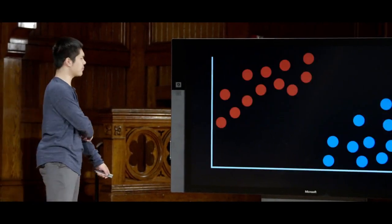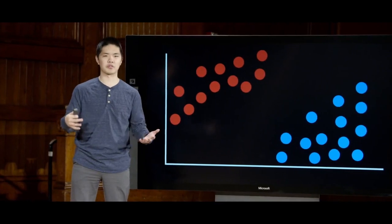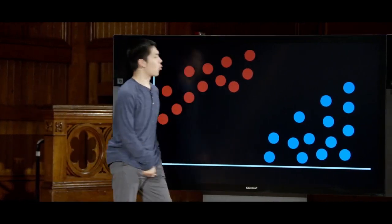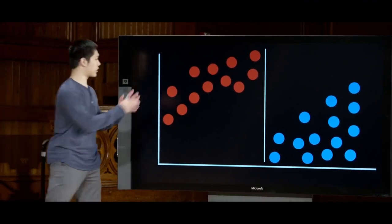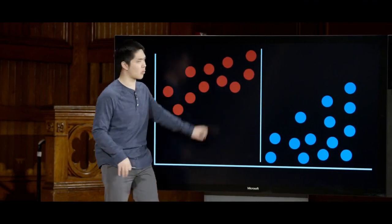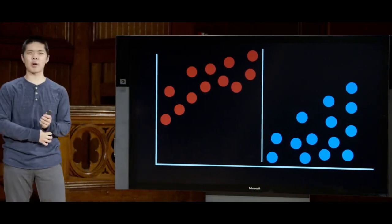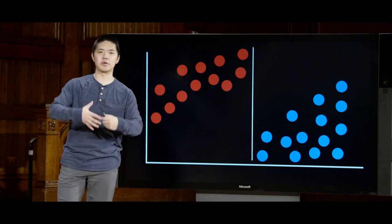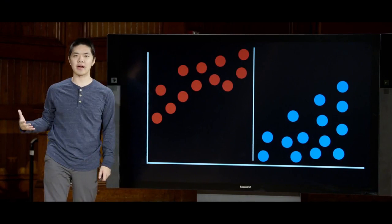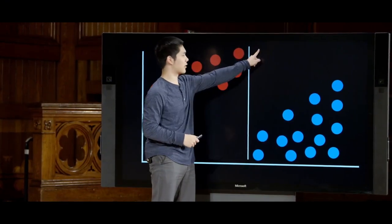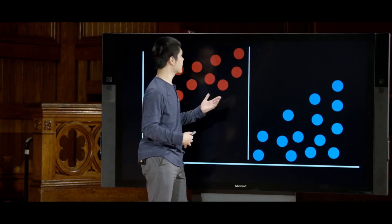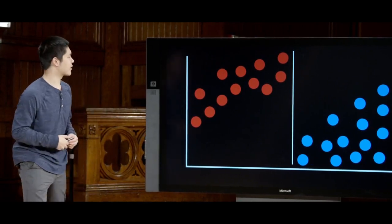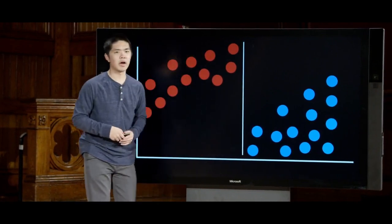The motivation behind the support vector machine is that there are actually a lot of different lines we could draw to separate two groups. If I had red data points on one side and blue data points on the other, one possible line could separate them perfectly — all red points on one side, all blue points on the other. But this should probably make you a little nervous, because you worry about how well it generalizes to data points not in the training set. For example, if there was a point that fell close to the boundary, our model might classify it incorrectly because the line is so close to those data points.